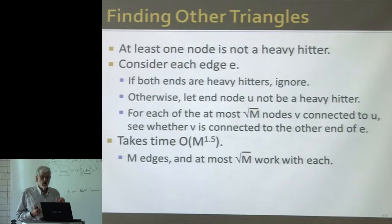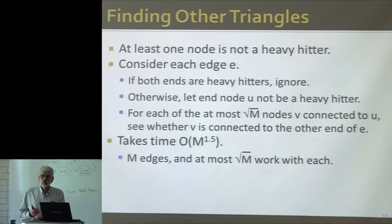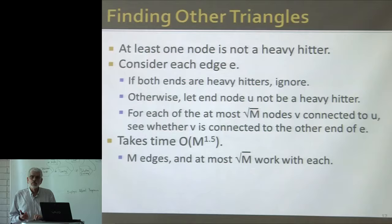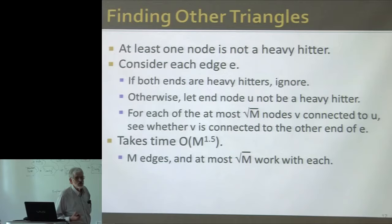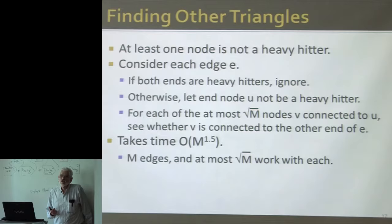Maybe you can comment on what kind of graphs you have in mind, because √m degree is quite large. For Facebook, √m degree is quite — yes, but think of Facebook: n is a billion, m is 300 billion. So nodes times edges is 3 × 10^20 — that's a big number. √m is going to be about half a million.